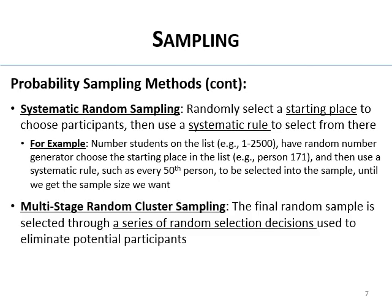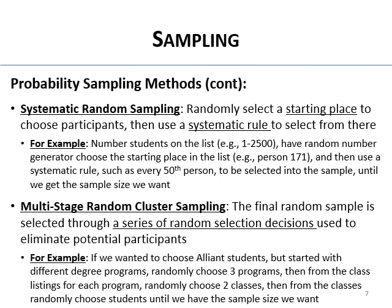There's also multi-stage random cluster sampling. This is when your final sample is chosen through a series of random selection decisions used to narrow down potential participants. You go through multiple stages, each one random, to arrive at your final sample.